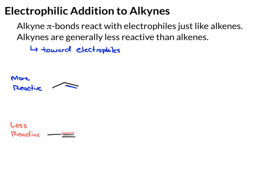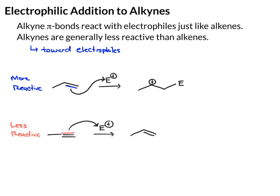Let's compare the reaction of both of these with an electrophile. With the alkene, we'll use the pi bond and react it with an electrophile. I'll put the electrophile on the less substituted carbon, so it follows a Markovnikov-type addition, and this gives us a carbocation. With the alkyne, if we do something similar and react away one of the pi bonds, we also get a carbocation.